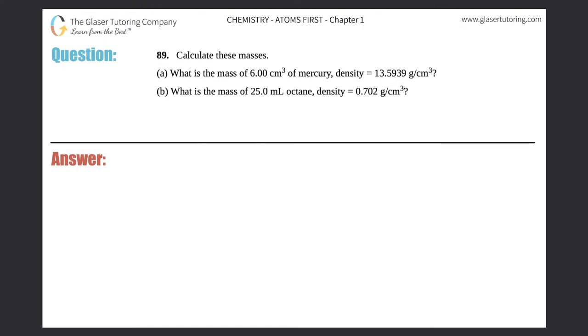Number 89, calculate these masses. I see that we have parts A and B, so I'm going to write A over here and B over here. For part A, they say what is the mass of 6.00 centimeters cubed of mercury, and it has a density of 13.5939 grams per centimeter cubed.